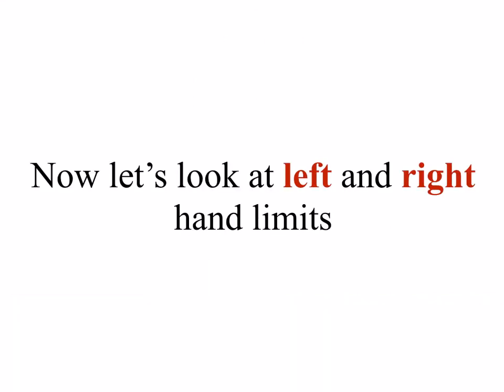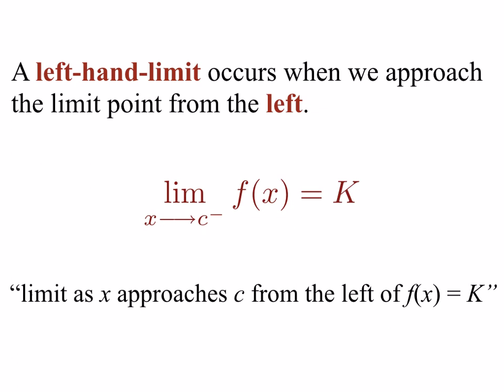Now let's dig a little deeper into the theory of limits and think about left-hand limits and right-hand limits. A left-hand limit occurs when we approach the limit point from the left. The notation is read: the limit as x approaches c from the left of f of x is equal to k. It's almost the same as the limit notation we had before, except there's a superscript minus sign. This superscript minus sign indicates that we're approaching the limit point from the left. Be careful — this does not mean minus c. When we have a superscript of a minus sign, that means approaching the limit point from the left.